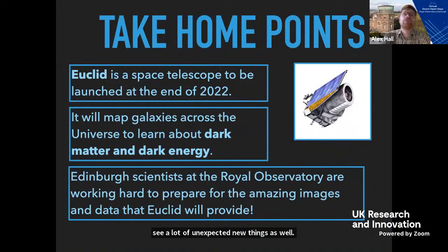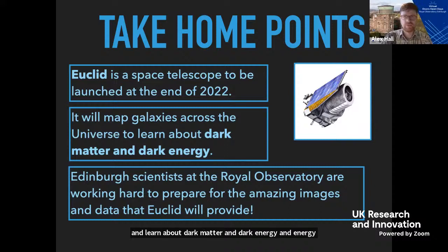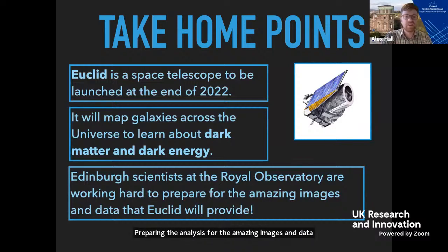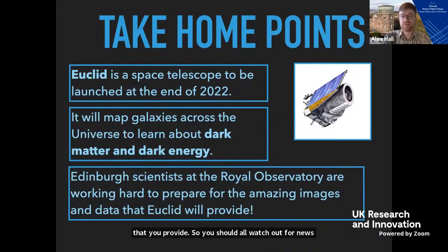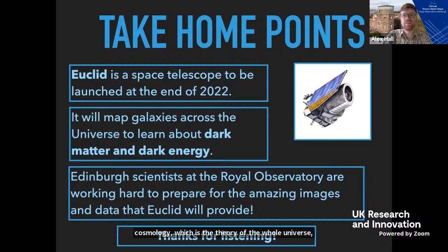To summarize: Euclid is a space telescope going to be launched at the end of next year. It's going to map galaxies across the entire universe and learn about dark matter and dark energy. Edinburgh scientists at the Royal Observatory are working very hard preparing the analysis for the amazing images and data that Euclid will provide. You should all watch out for news from Euclid over the next few years because this is going to be a transformational experiment for cosmology — the theory of the whole universe, its history, its contents, and its future.